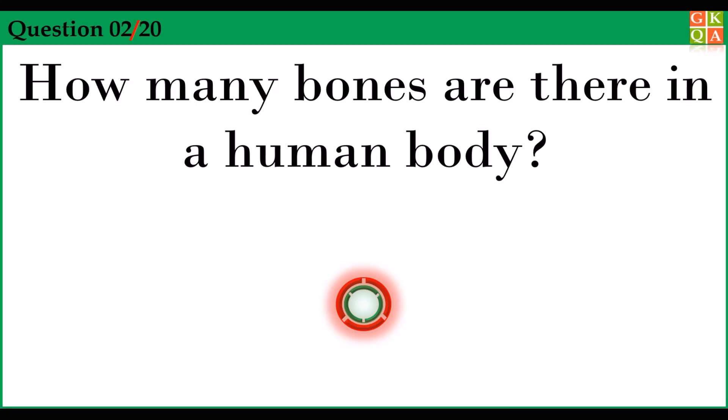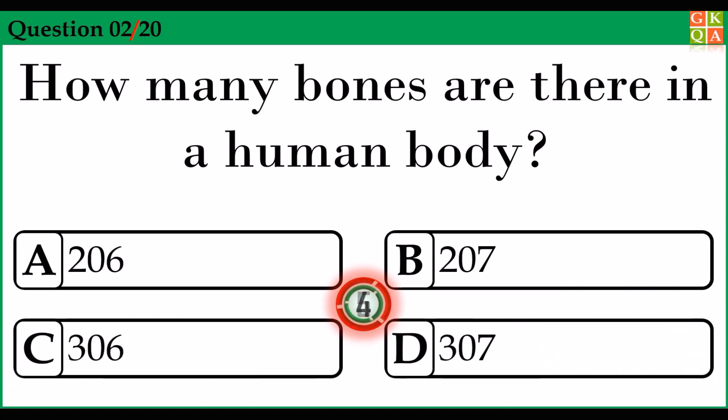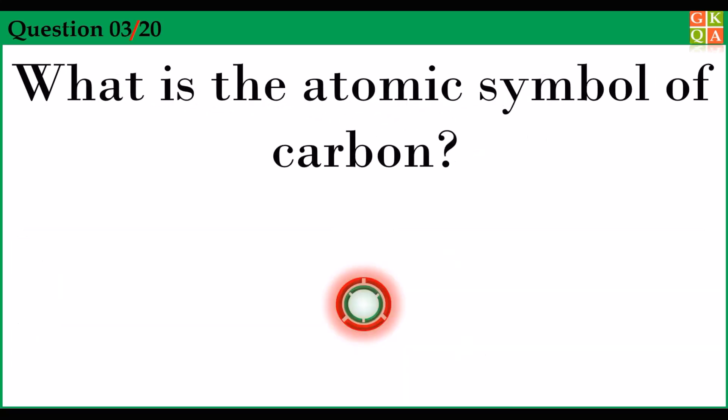How many bones are there in a human body? Answer option A: 206. What is the atomic symbol of carbon?